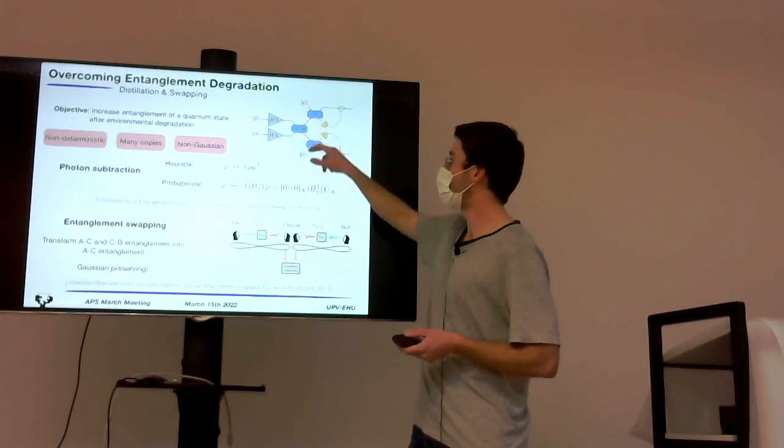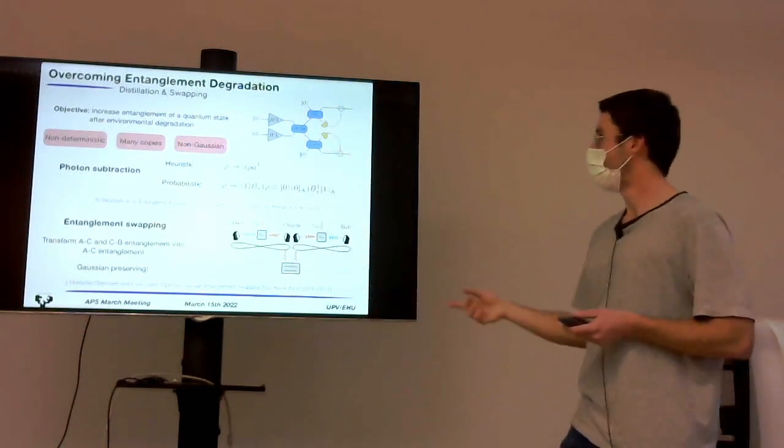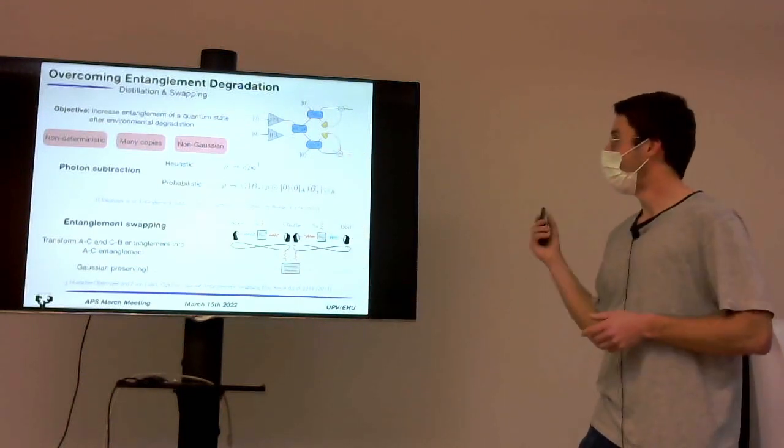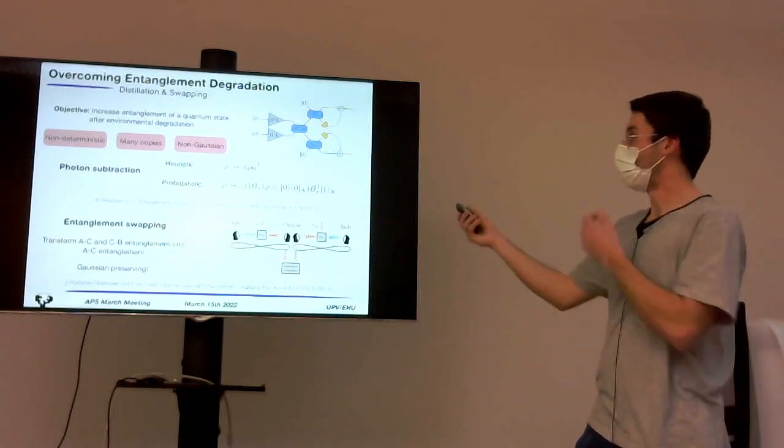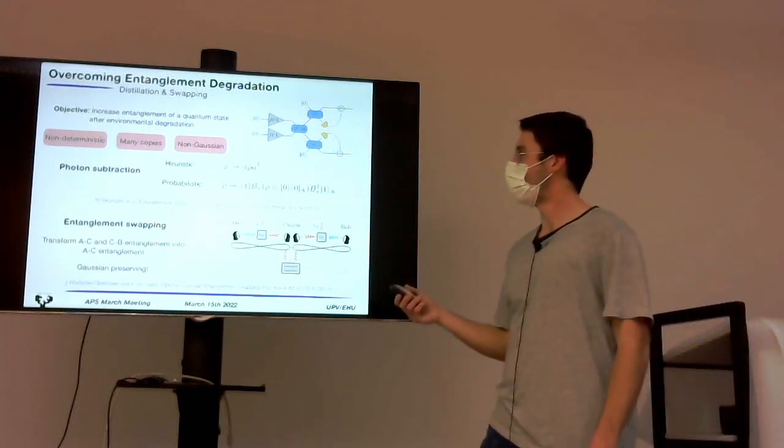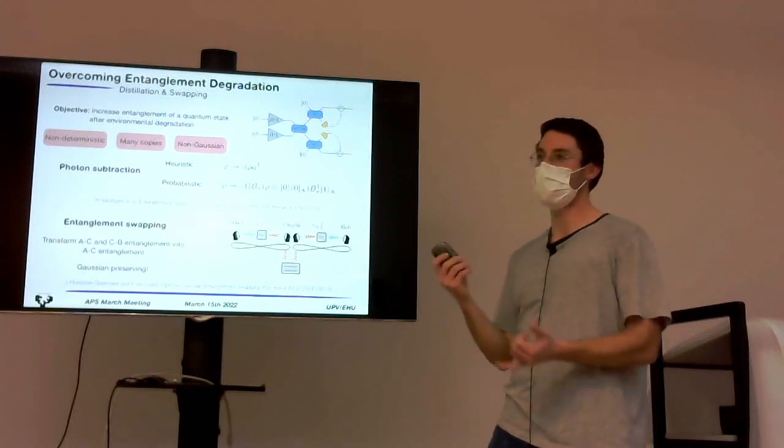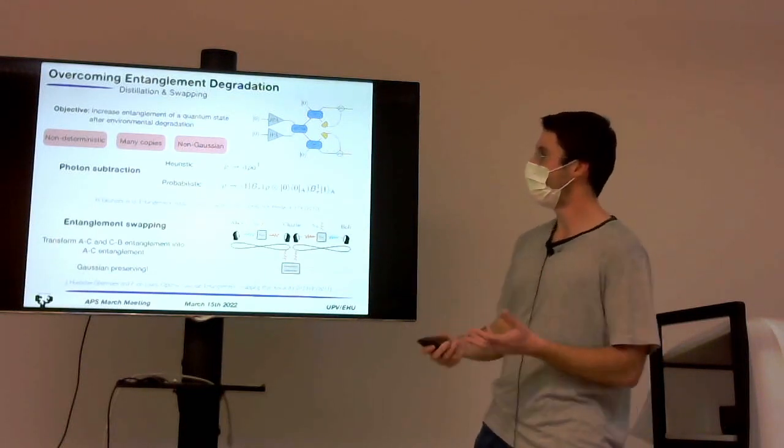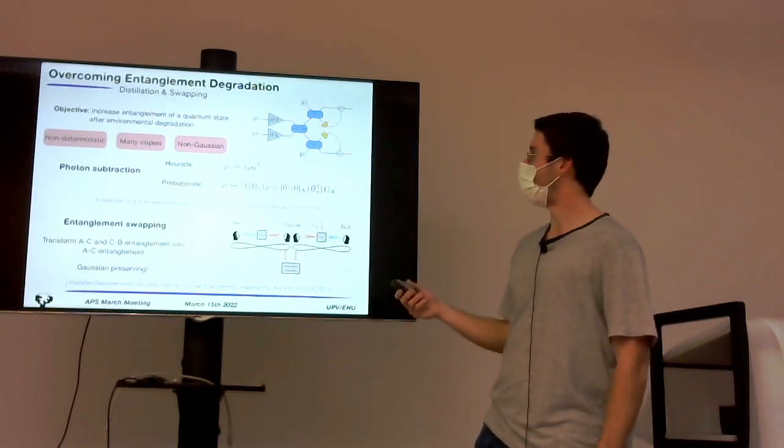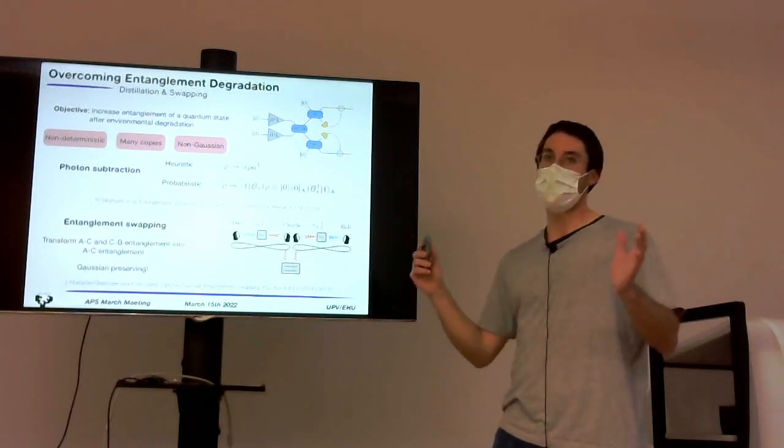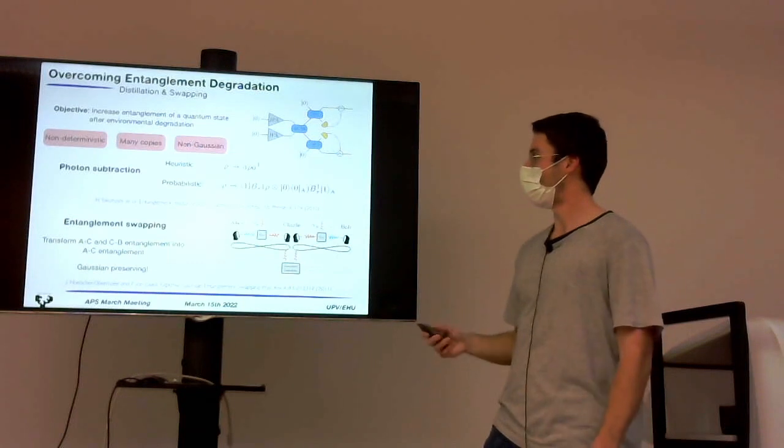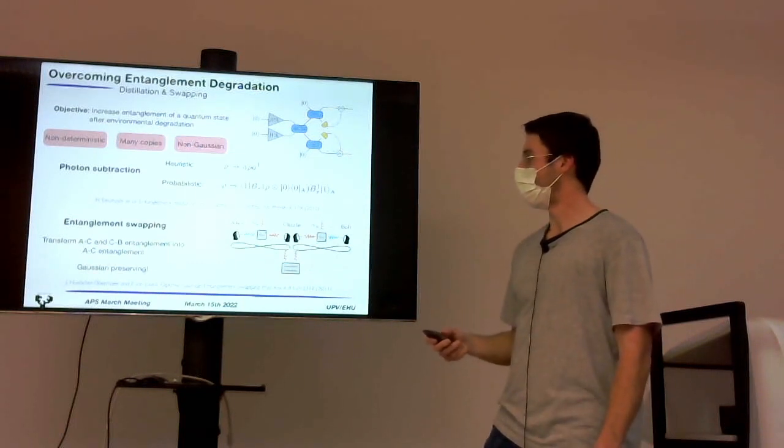So, effectively, in each mode of the two-mode state, one photon has been subtracted. And generally, we have considered this protocol because other entanglement distillation protocols require many copies of the state, they are not deterministic, and I think most of them are non-Gaussian, so they are not quite efficient, not quite favorable in any case.